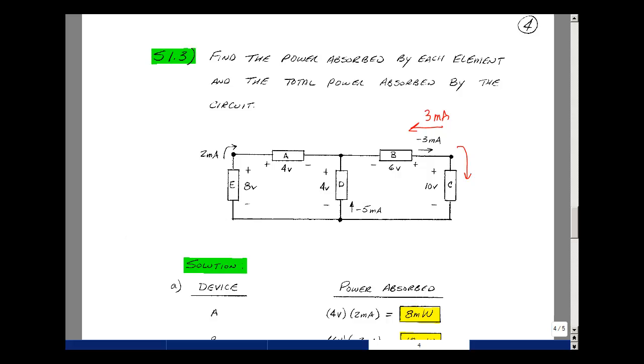For device D, current enters the minus terminal and leaves the plus. Let's turn the direction around to plus 5 milliamps. The product of 5 milliamps and 4 volts gives 20 milliwatts.